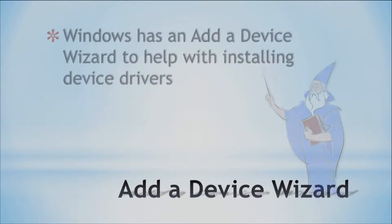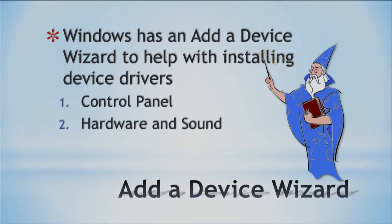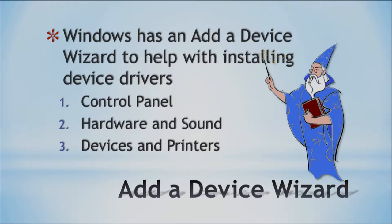The Add a Device Wizard is the name of the wizard for Windows, and it helps with installing device drivers. Go to the Control Panel, look for Hardware and Sound, then Devices and Printers, then Add a Device. If you get lost with the instructions, you can also just Google 'add a device wizard' and that'll pop up, or come to the slides. If you get lost, ask your instructor to help you out.